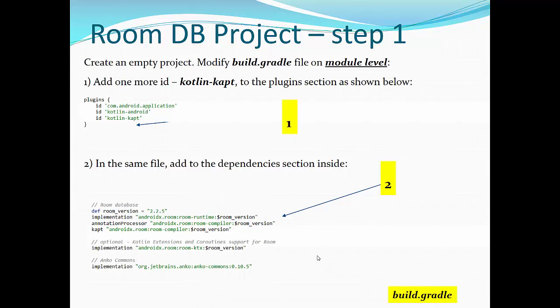In the next step, we will see how to proceed. What steps you have to take to create a Room database project. First of all, you have to create an empty project and modify build.gradle file on module level. Two modifications are required. You have to add one more ID kotlin-kapt to the plugins section as shown below. And in the same file, you have to add to the dependencies section. Inside, you have to add room database version, a couple of annotations and implementations. Optionally, you have to add Kotlin extension and coroutine support for Room if you will be using them in the future. And we need, in this case for the introduction version, Anko Commons org.jetbrains.anko library for using asynchronous threads, asynchronous modules in our database.